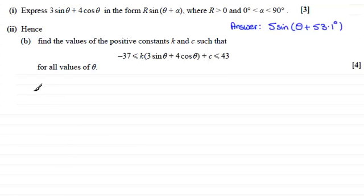Well, first of all, let's just copy down the question. We have minus 37 is less than or equal to k multiplied by all of 3 sine theta plus 4 cos theta. And then if we add the c, this is less than or equal to 43.